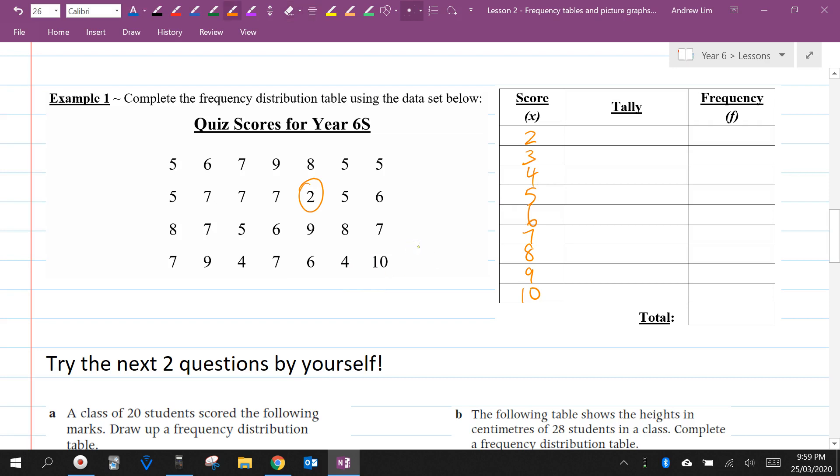Then we ask ourselves, how many are there of each score? So one person got two. How many people got three? No one. So I'm just going to write a zero here. How many fours are there? Two. How many fives? Six. And by the way, I highly encourage you to cross out the numbers as we go. That way if you miss a number, you can see that you didn't cross it out and you know where to add it.